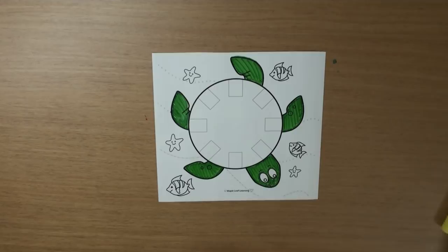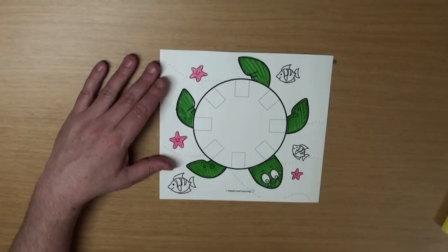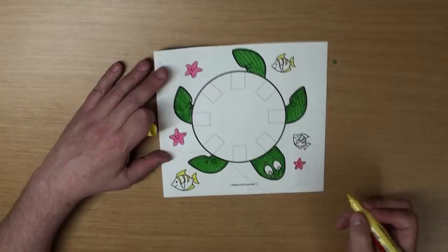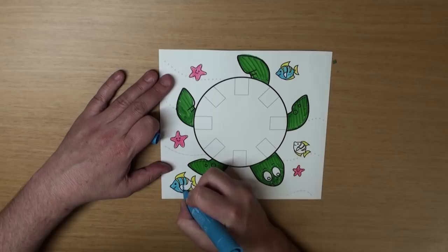What's this? Yeah, it's a starfish. There's three of those. I'm gonna color mine pink. What's this? That's right, it's a fish. There's three of those too. I'm going to color my fish yellow and blue. But please color your fish any color you want, okay? Yeah.